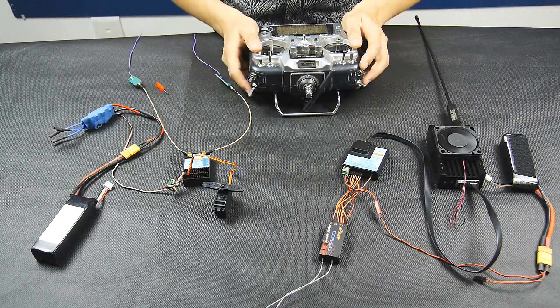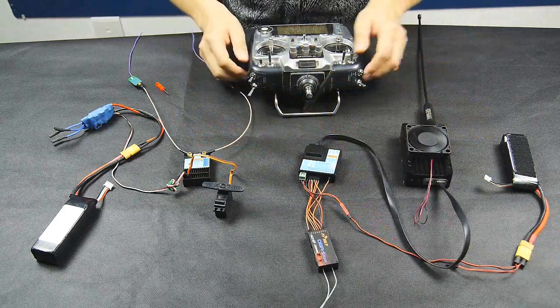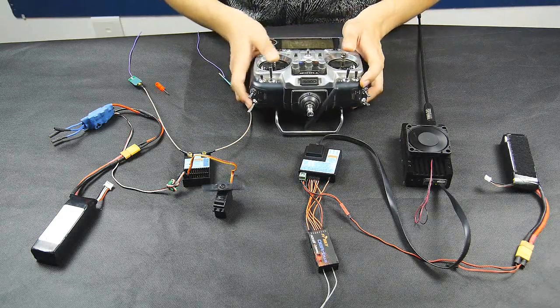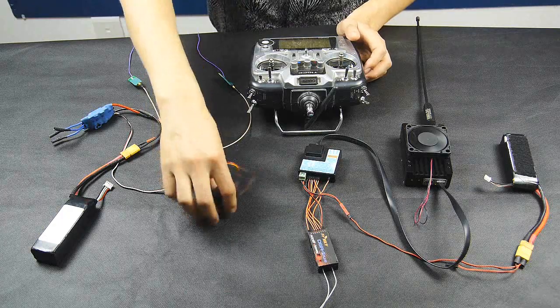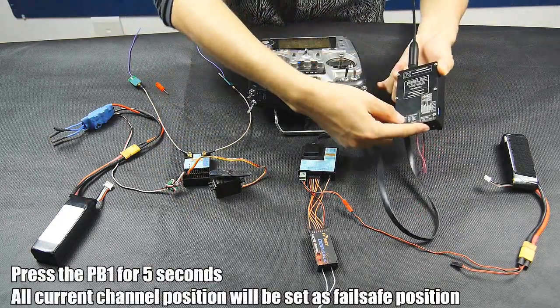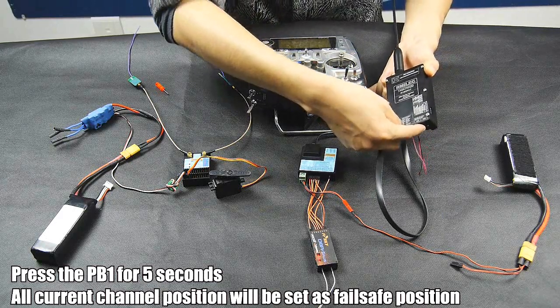So talking about the failsafe, I'm going to tell you how to set the failsafe on this UHF system, which is very easy. Let's go back from the working mode. I can control. For example, I put my servo at this position and then press the transmitter module's PB1 button for 5 seconds. 1, 2, 3, 4, 5. It's done.